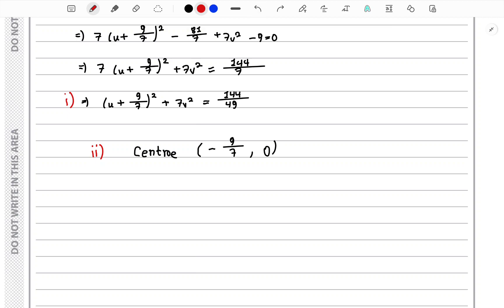We know that x minus a whole square plus y minus b whole square equals to r square is a circle with center a comma b and radius r.